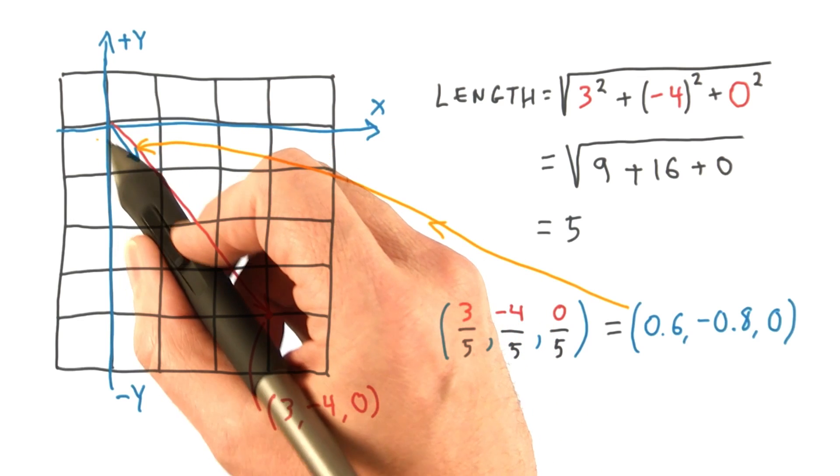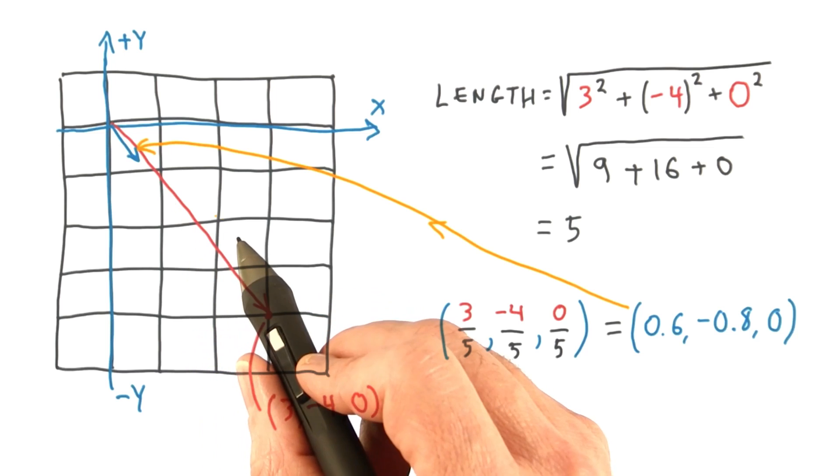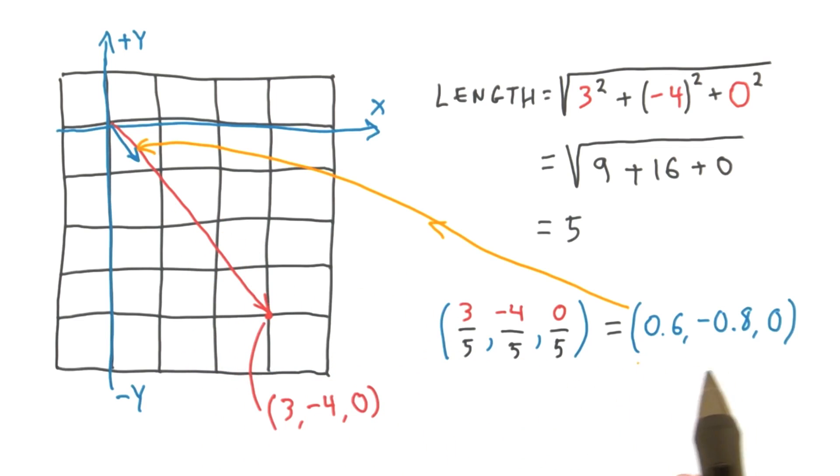Looking at this vector, it goes the same direction, but only travels 1 unit. Note that normalizing a vector that's already normalized leaves it unchanged. Try normalizing this vector again, and you'll find the length is 1. Dividing the vector by a length of 1, of course, does nothing.